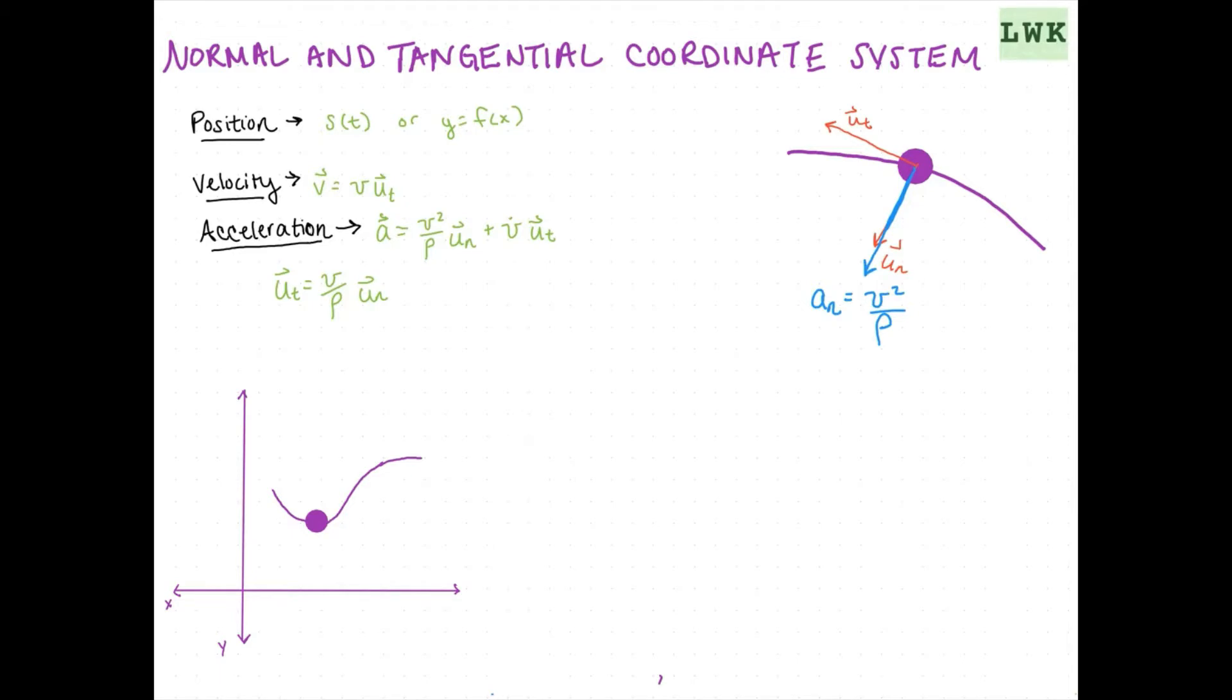And our tangential acceleration, At, V dot. From here, we're going to get our total acceleration, A, as these just form a vector triangle. And that will give us our total acceleration.